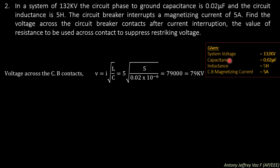We need to find the voltage across the circuit breaker contacts while breaking. The formula is V = I into root of L by C, where L is the inductance, C is the capacitance, and I is the current to be broken. The magnetizing current is 5 amperes. Substituting 5 amperes, inductance 5 Henry, and capacitance 0.02 microfarad (converted to farads by multiplying by 10^-6), we get 79,000 volts, or 79 kV.